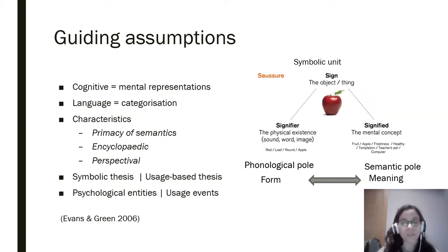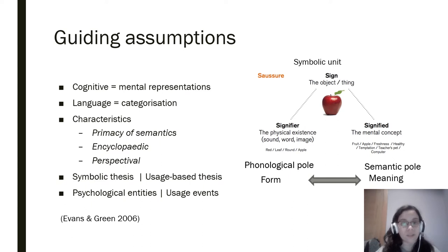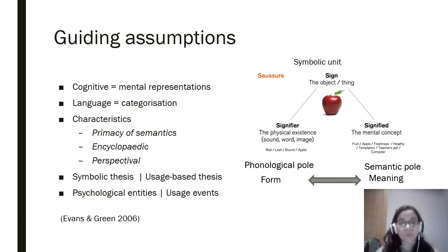These approaches have several assumptions in common. They are called cognitive because they study how the human mind represents the world through language. Thus, language is considered an instrument to organize our knowledge of the world. If the primary function of language is categorization, knowing a language is fundamentally semantic in nature. It roots from experience and it shapes our interpretation of the world.